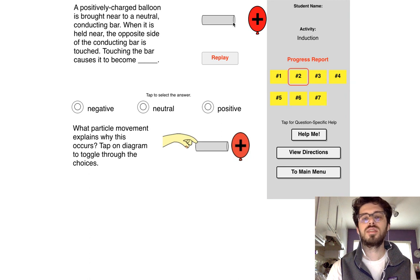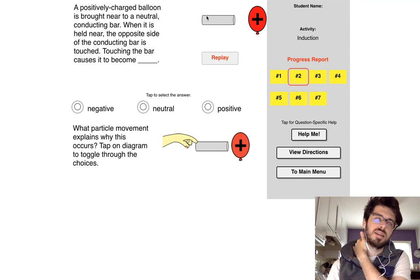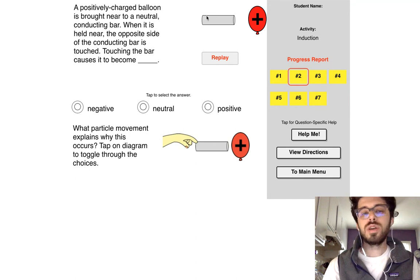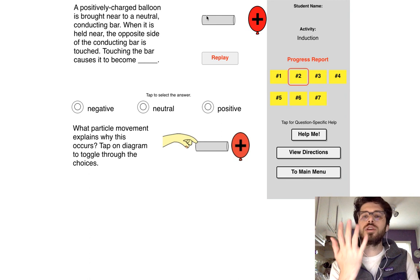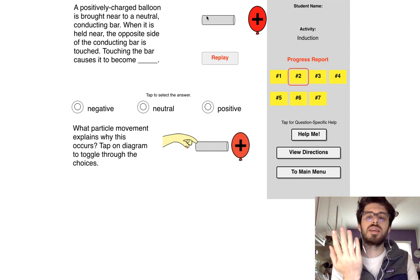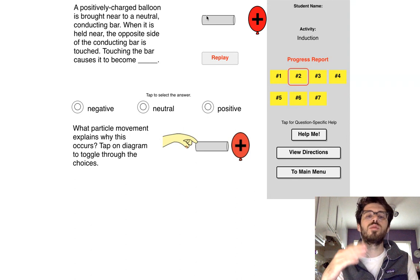If you bring a positive charge close to this bar, what's going to happen? All of the electrons are going to flow over to that side. So what you're going to have over here is a lack of electrons on the left hand side. When you go ahead and touch it, your hand has protons and electrons in it as well. All of the electrons in your hand are going to want to go into this bar.